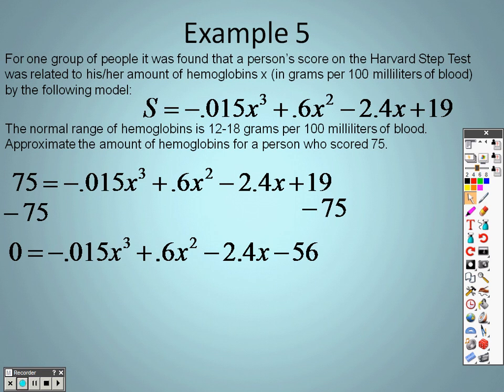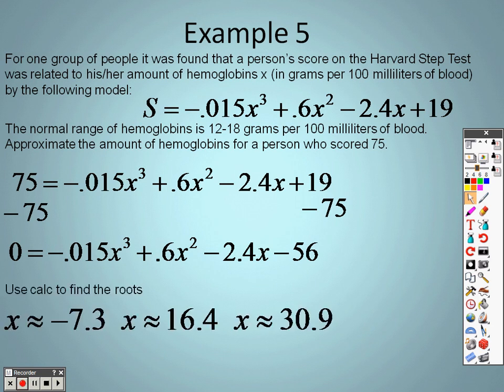I go to 2nd trace again because it's crossing at another point. So I hit 0 again. And the left bound is now above the next one. And it is also below. I guessed the point again, and I have 30.92. And let's zoom out one more time just to make sure that I'm not missing any points. And that's the only spot that's crossing at. So the actual roots that we get, like I said, were negative 7.3, 16.4, and 30.9.